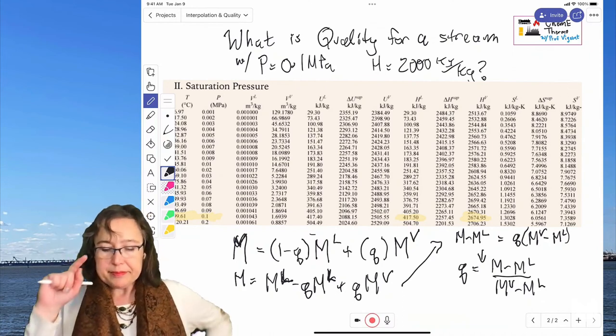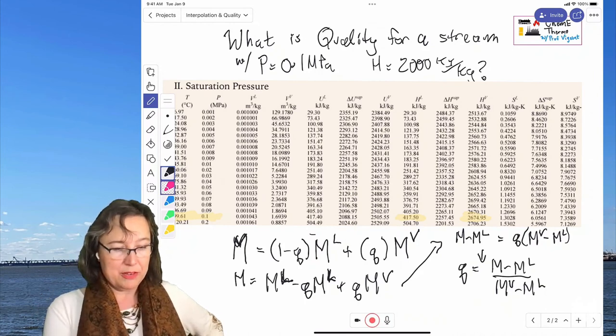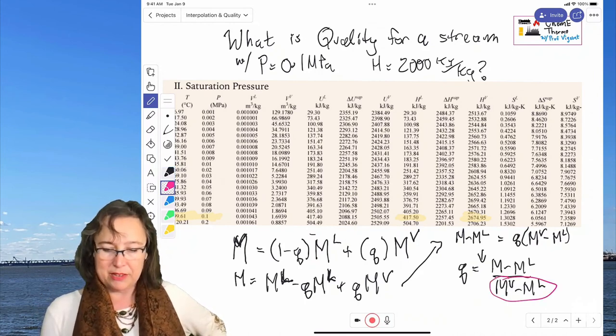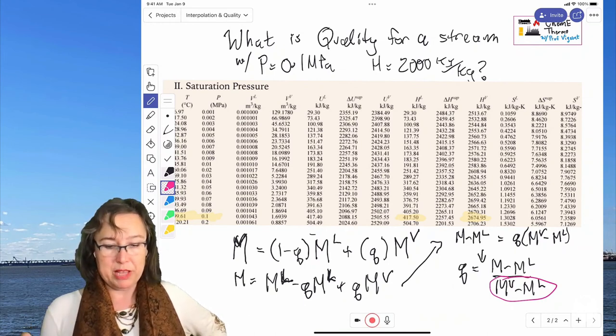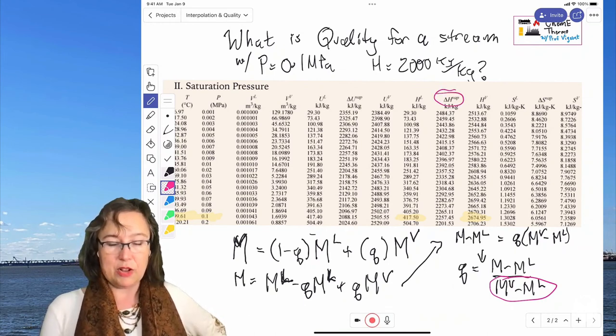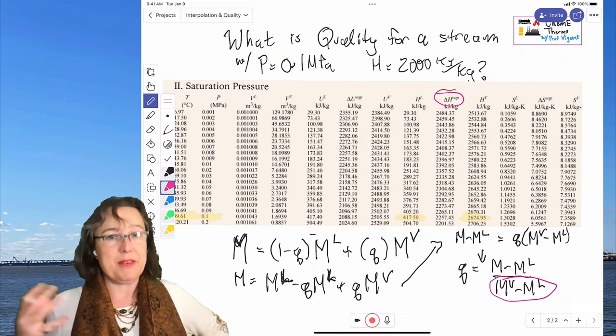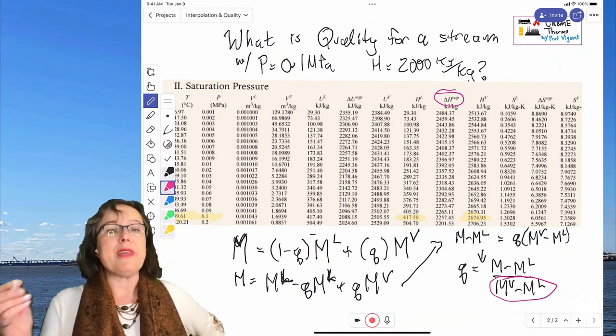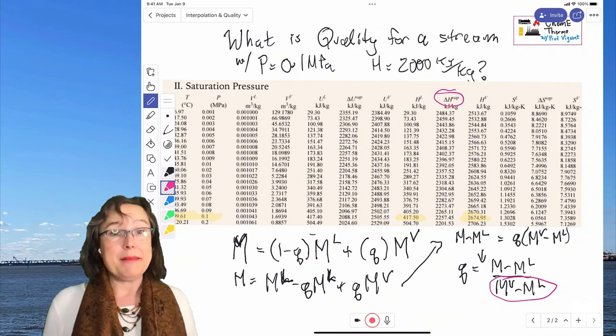Okay. Interesting thing here, a fun little time-saving device, this MV minus ML. So the property of the vapor minus the property of the liquid, that is identical to the Delta, whatever that property is of vaporization, right? Like by definition, that's what that is. So rather than you doing that subtraction, you can just look it up and write it down. Okay. Enjoy.